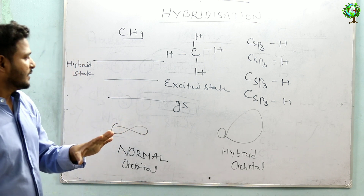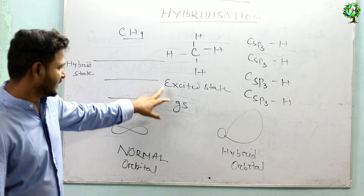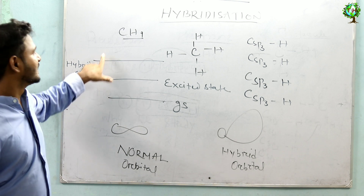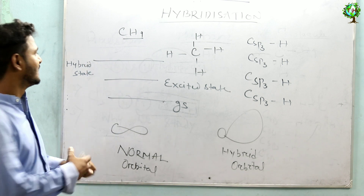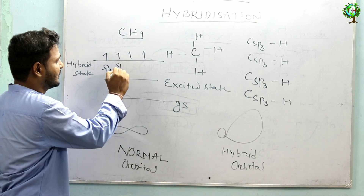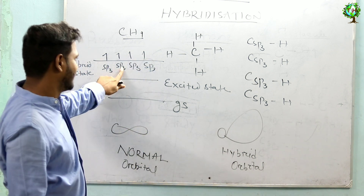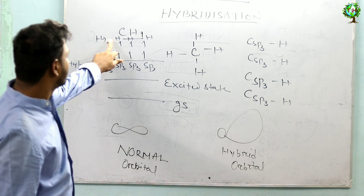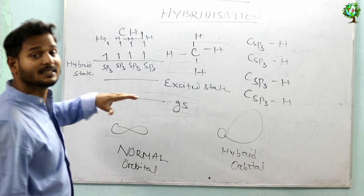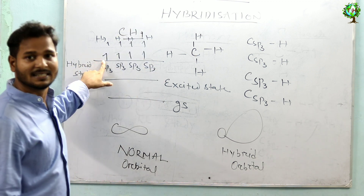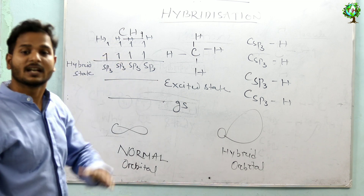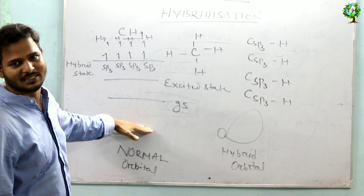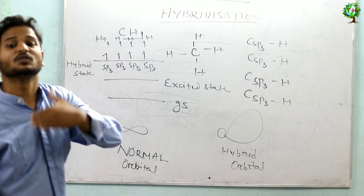So I already showed you: this is the ground state of carbon, this is the excited state, and this is the hybrid state. In that hybrid state, the four unpaired electrons are in SP3 hybrid orbitals. They can form bonds with four hydrogen atoms. This hybrid state is at a higher energy level. That means in this state, if the carbon forms bonds, more amount of energy is released — because it has more energy. This hybrid state is higher than the excited state and higher than the ground state. If on the hybrid state the molecule is formed, it loses more amount of energy.